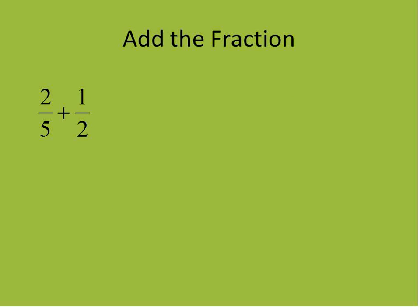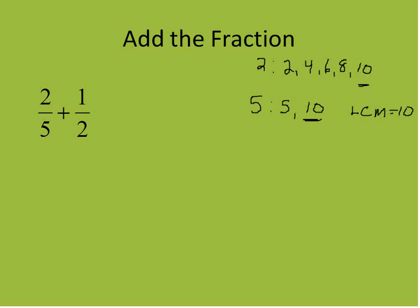Here's an example of us adding fractions. We're going to find the least common multiple by listing the multiples: 2, 4, 6, 8, 10 — and the multiples of 5 are 5, 10. We don't have to go any farther; we found our least common multiple is equal to 10.